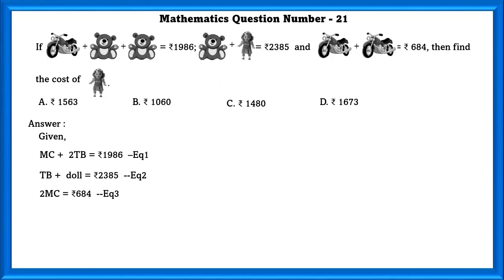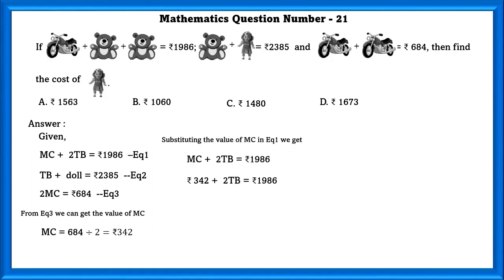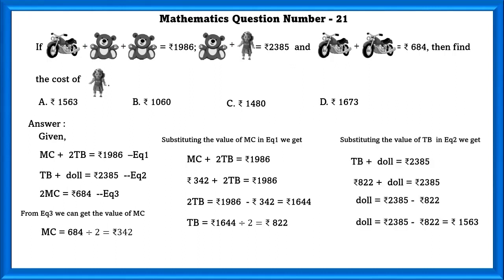Here MC is motorcycle, TB is teddy bear, and doll is doll. We can take these as equation 1, 2, and 3. In equation 3 we can find the value of MC, that is equal to 342. Substituting the value of MC in equation 1 we get the value of TB which is equal to 822. Substituting the value of TB in equation 2 we get the value of doll, that is 1563.